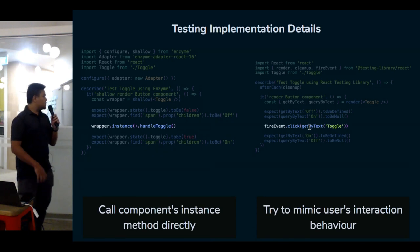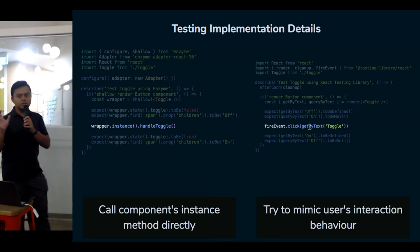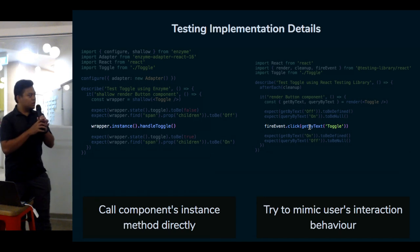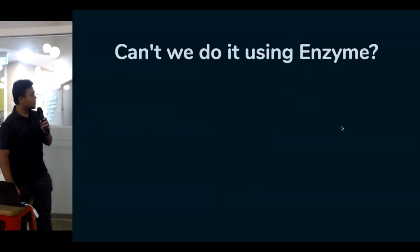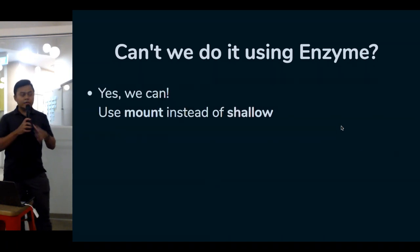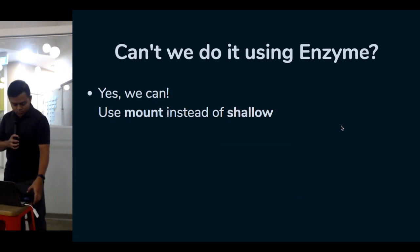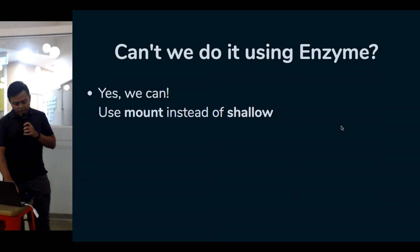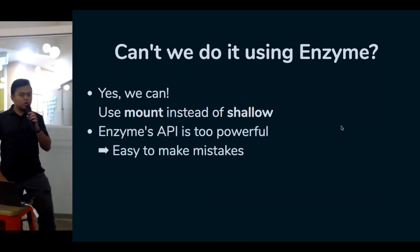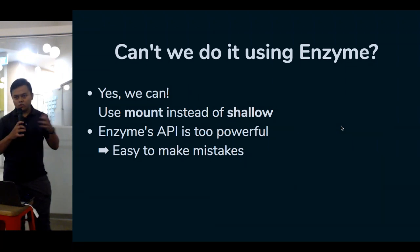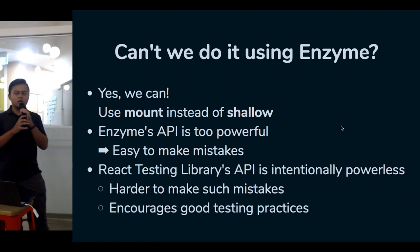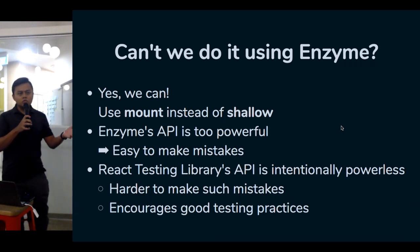In Enzyme it's also possible to get functions from the component instance, which again is impossible in React Testing Library — you have to find the text and click the button containing it. Can we do it using Enzyme? Yes, by using mount instead of shallow. But Enzyme's API is too powerful — it's possible to access inner state of the component, which makes it easy to make mistakes. React Testing Library's API is intentionally powerless: you can only get what the component returns.